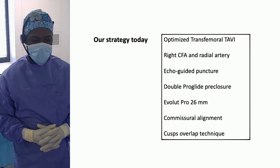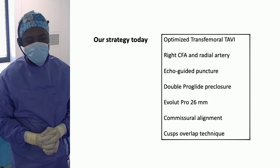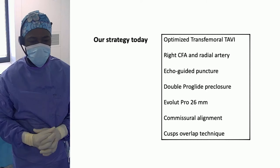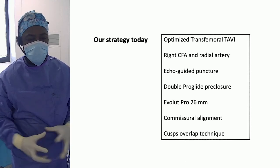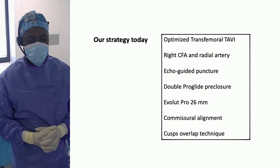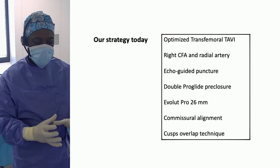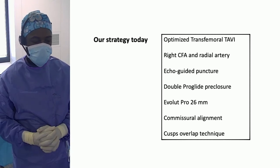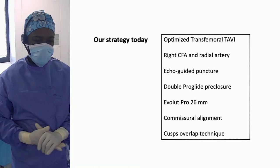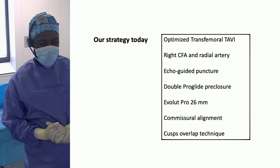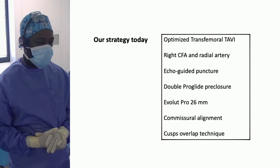The strategy today: an optimized transfemoral TAVI with right common femoral artery and right radial access, echo-guided puncture, double Proglide for pre-closure. The valve will be an Evolut Pro 26 because in this small anatomy we need to achieve the best hemodynamics possible, and a self-expanding supraannular platform is appropriate. Given the sinus of Valsalva size of 29mm and the sinotubular junction, a 26 fits appropriately. Additionally, the patient has grafted coronaries, so the risk of coronary impairment is quite small. Commissural alignment and cusp overlap technique will be combined for this case.